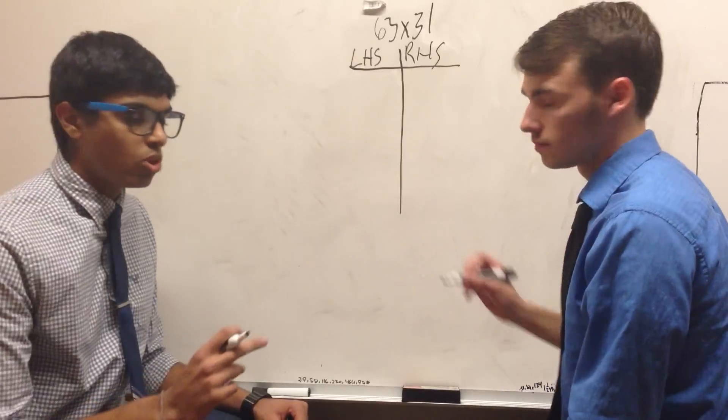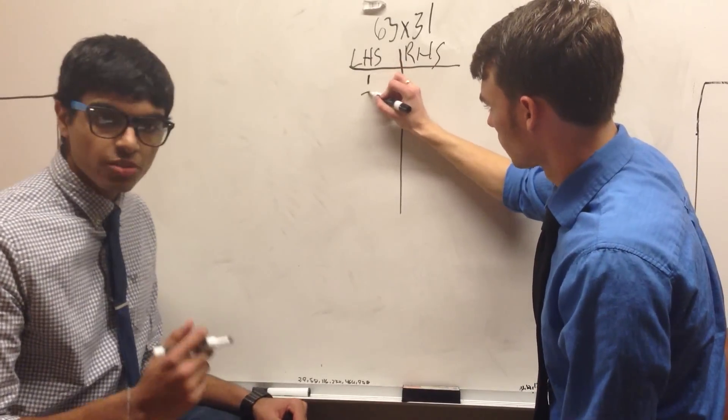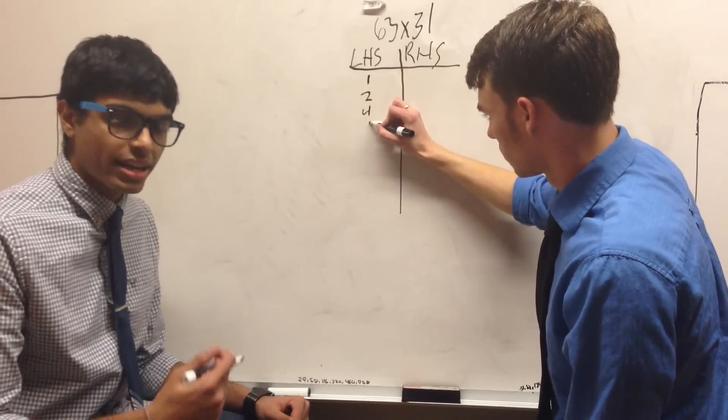Start with the left-hand side with 1, and keep doubling that number until you reach a number greater than your left-hand number, in our case 63.